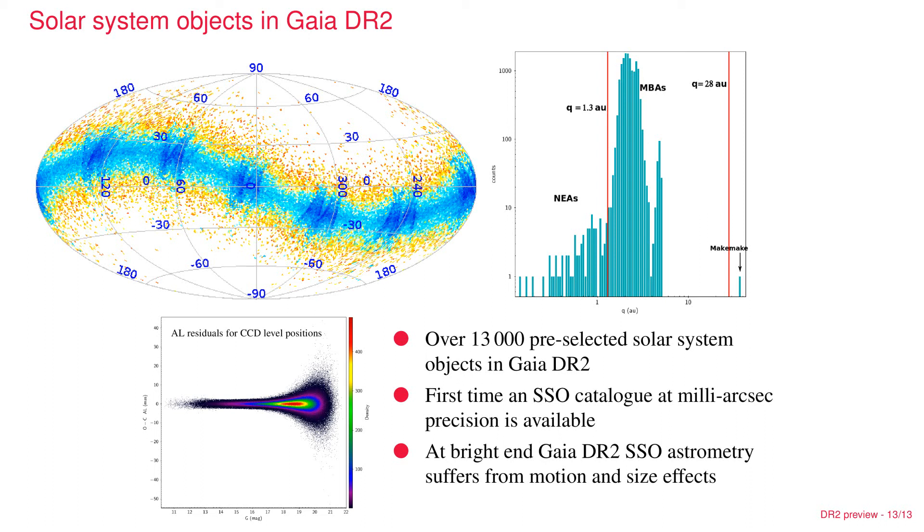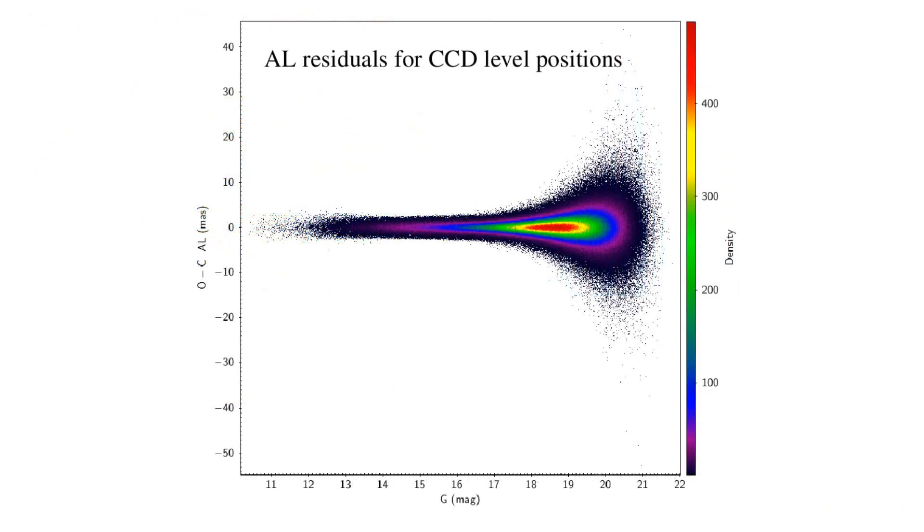On the bottom left, you see a diagram that shows the residuals with respect to a model fit of the CCD level positions. These are all at the bright end at the level of milliarcseconds, illustrating that also for asteroids, the astrometry is extremely precise. Keep in mind, these are individual CCD measurements that have not, like for stars, been combined into a single parallax and proper motion.